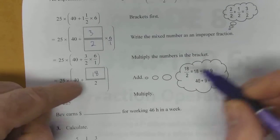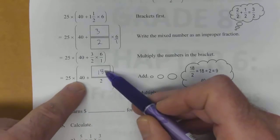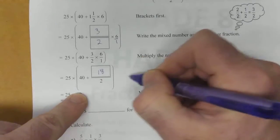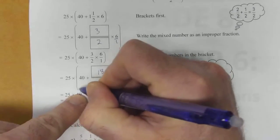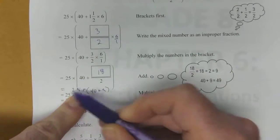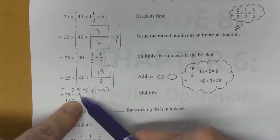Well, 18 over 2, if you reduce it down, is just 9. So we can simplify that to 40 plus 9 is what's inside the brackets. And then we've got this 25 times. We can throw this extra line in to show this process. So now 40 plus 9 is 49.